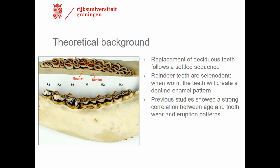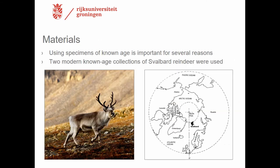First, some theoretical background. Aging of mammals based on tooth eruption is possible because deciduous teeth get replaced in a set sequence, mostly related to set ages, although there is an age range. Aging of reindeer based on tooth wear patterns is possible because reindeer have selenodont teeth, meaning they have dentine and enamel infolds in their teeth. When the tooth wears away, you can see it in the result as a pattern. Previous studies have shown a strong correlation between age and tooth wear and eruption patterns, although there is also a range.